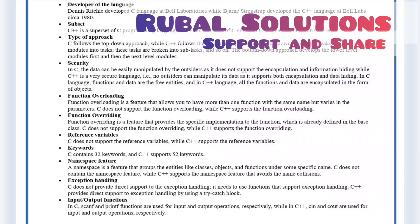Exception handling. C does not provide direct support to exception handling — it needs to use functions that support exception handling. C++ provides direct support to exception handling by using a try-catch block. Input-output function. In C, scanf and printf functions are used for input-output operations respectively, while in C++, cin and cout are used for input-output operations respectively.